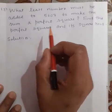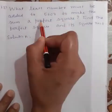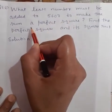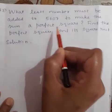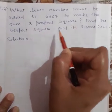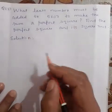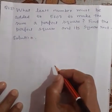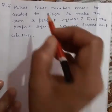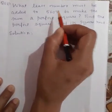Let us discuss the next question. What least number must be added to 5,607 to make the sum a perfect square? Find the perfect square and its square root. Let us try to find the square root of 5,607 by long division method.